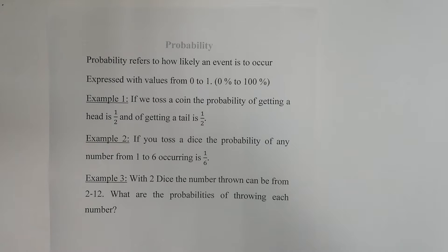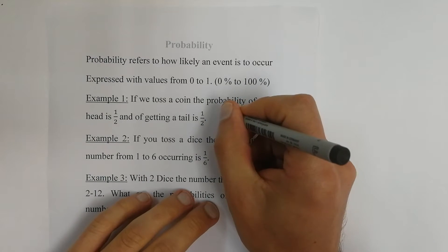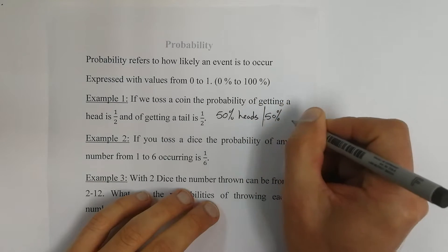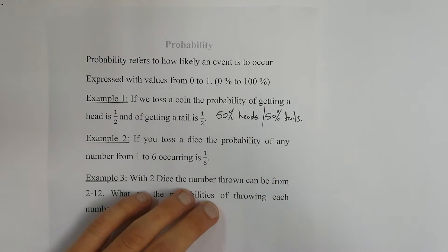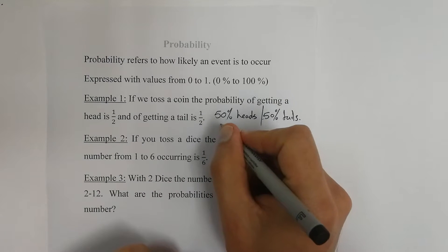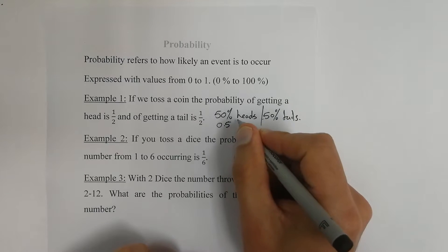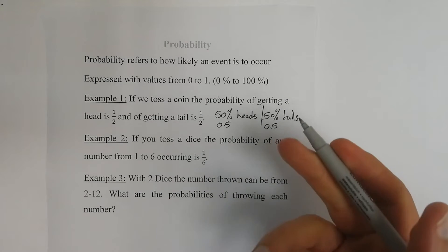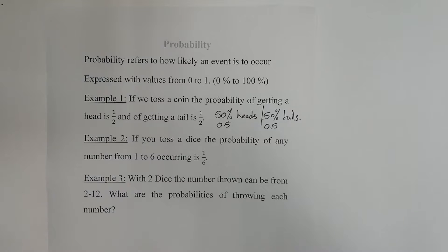The first example is tossing a coin. We all have done that experiment — you can either get heads or tails, so there's a 50% chance of getting heads and a 50% chance of getting tails. You could also express it as 1/2 or as a 0.5 probability of getting heads, or a 0.5 probability of getting tails. The percentage is just the value between 0 and 1 multiplied by 100. This assumes the coin is not biased to one side.